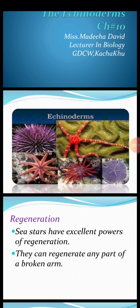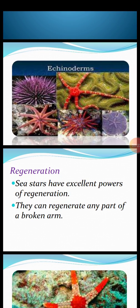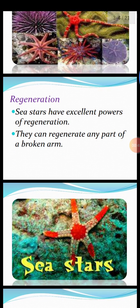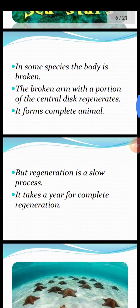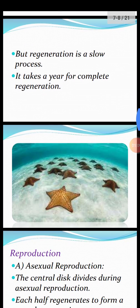A picture of different types of Echinoderms is shown. The ability or power to regenerate — to regain parts of the body that are injured or lost — is remarkable in sea stars. Sea stars have excellent powers of regeneration; they can regenerate any part of a broken arm. In some species, the broken arm with a portion of the central disc regenerates to form a complete animal. However, regeneration is a slow process — it takes about a year for complete regeneration.